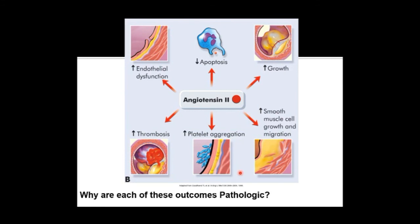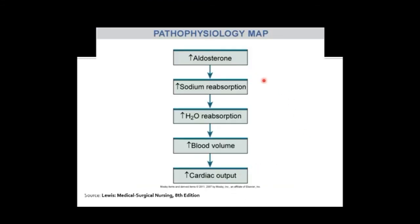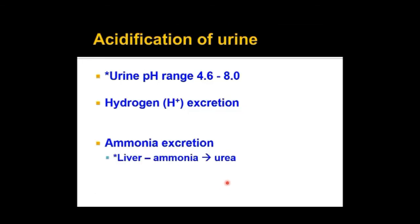Looking at aldosterone specifically: increased aldosterone from the adrenal cortex — stimulated by angiotensin two — leads to increased sodium reabsorption in the renal tubules. Water follows sodium, increasing blood volume and ultimately increasing cardiac output. This flow chart can serve as a template for understanding other hormones covered later in the course.